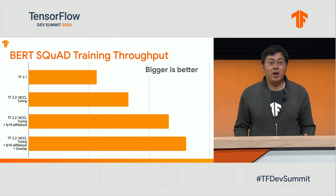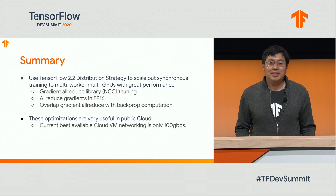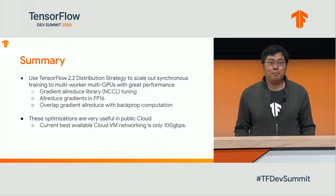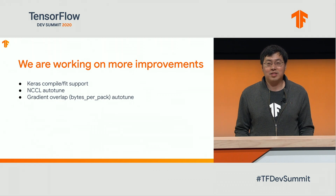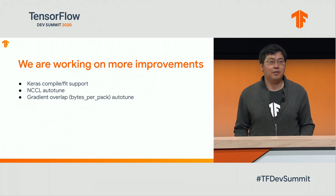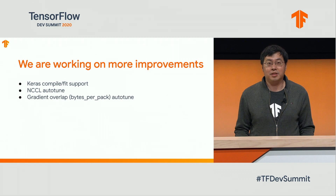With these three optimizations, we have seen BERT SQuAD training throughput improve by 2.5x. These optimizations are especially useful in public cloud where networking between cloud VMs is limited. We are also working on more improvements: supporting Keras Compile and Fit, auto-tuning NCCL parameters, and auto-tuning pack size. All of these are coming in future releases of TensorFlow. Stay tuned for more improvements.